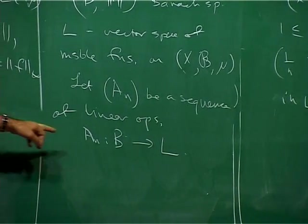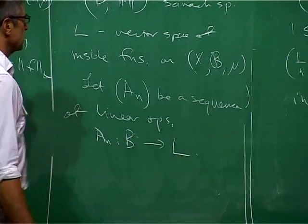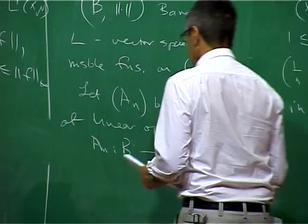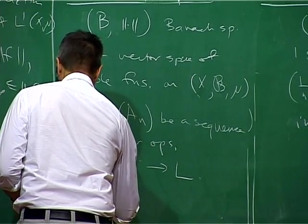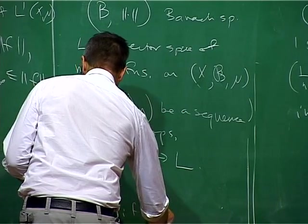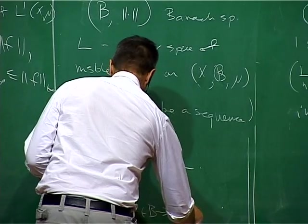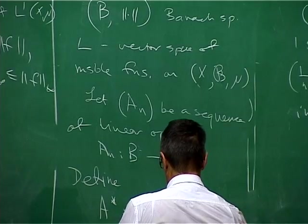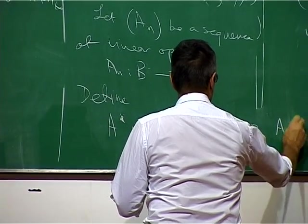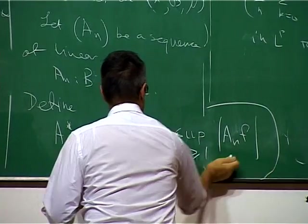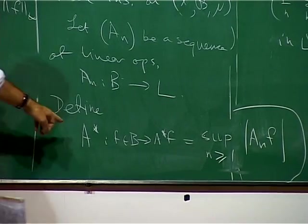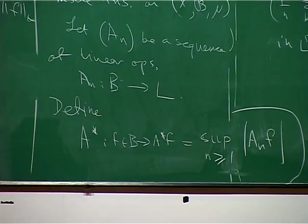And supposing we have a sequence of linear operators which go from the Banach space into this space of measurable functions and we'll define the maximal operator A star maps F in B goes to A star F. So you just take the values AN F at x, you take the supremum as N goes to infinity of that.